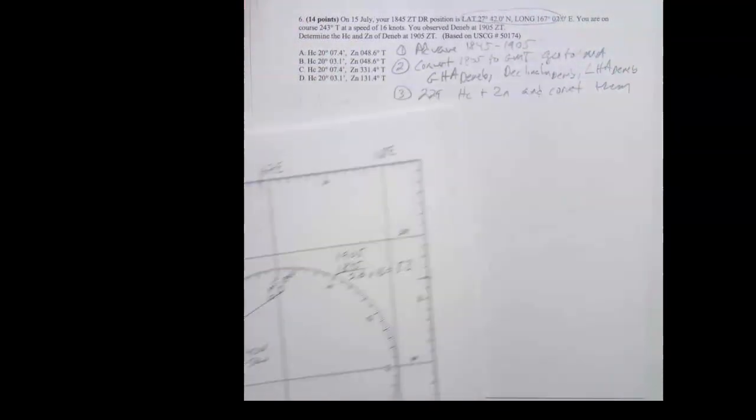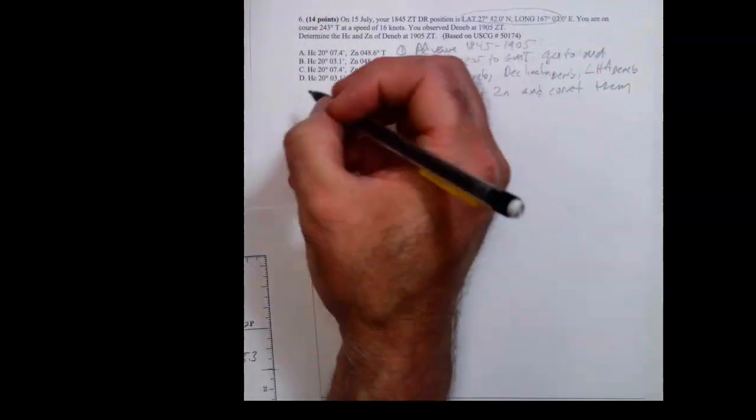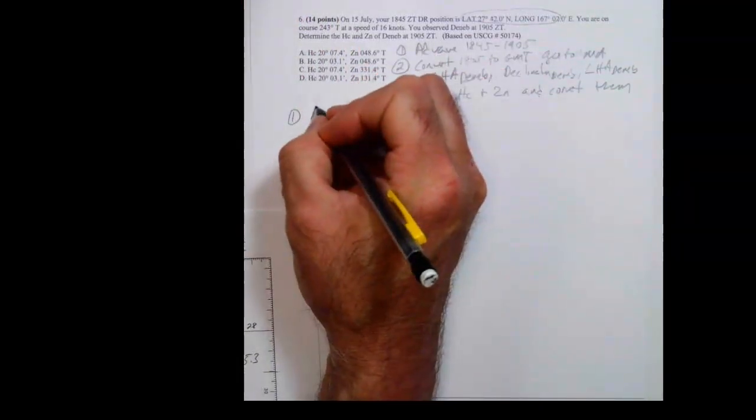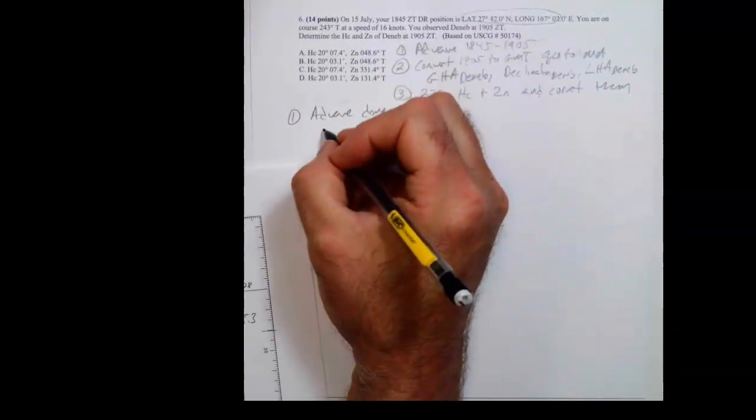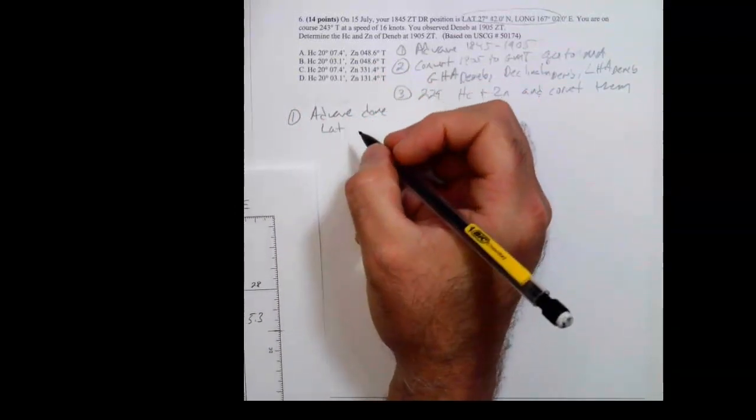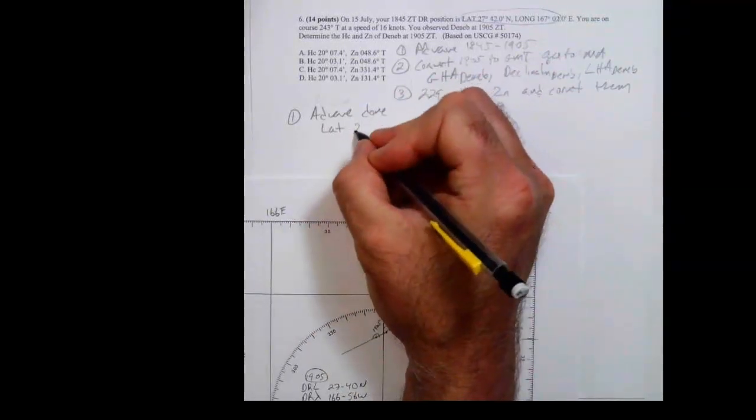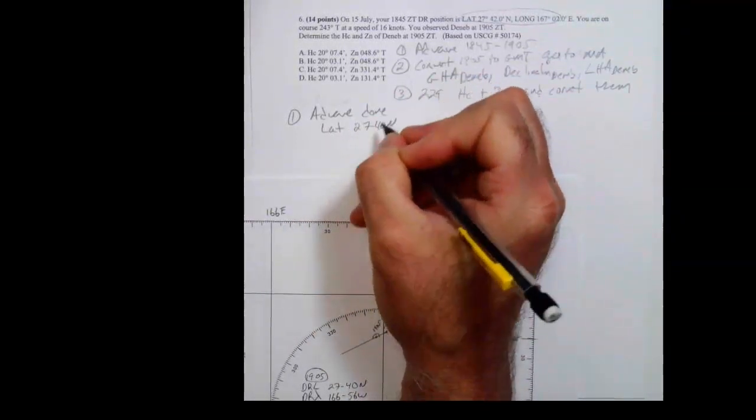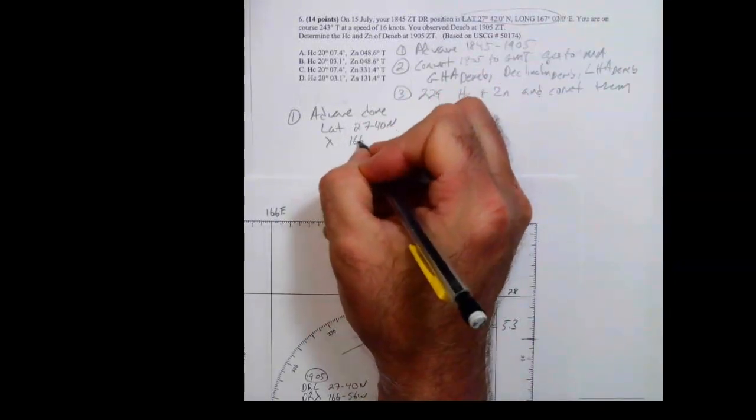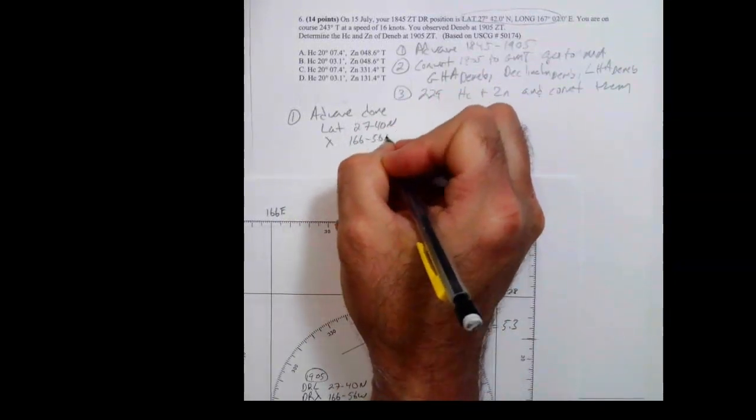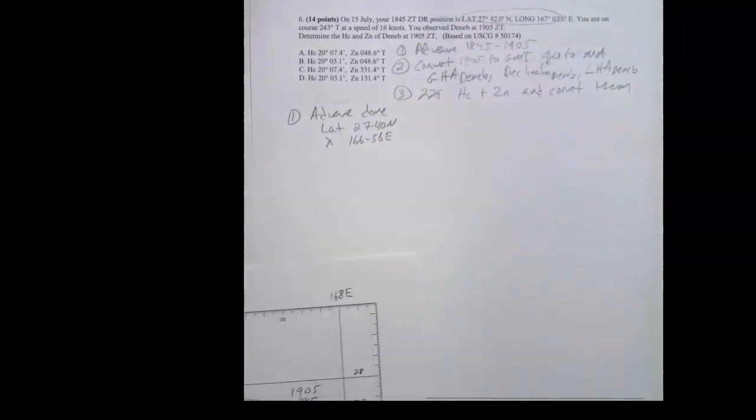My DR latitude is 27°40', and my DR longitude is 166°50' at 1905. So I'm going to use that now as the basis for my reduction. The advance is done.